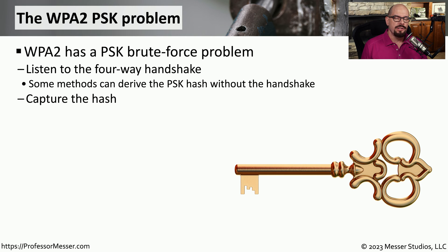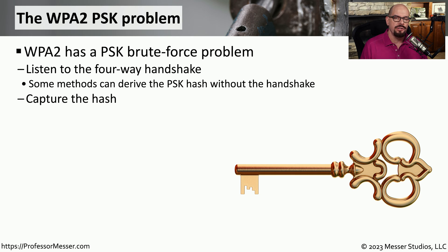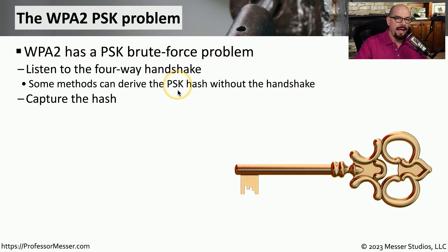Through the years, our wireless networks have used an encryption protocol known as WPA2 to encrypt all of this data. But WPA2 does have a significant security concern when it comes to the initial connection to the wireless network. There's a four-way handshake that occurs during the initial connection with WPA2, and there's a hash that is associated with that handshake. The goal from the attacker's perspective is to somehow derive that pre-shared key hash, or capture that hash during the handshake.